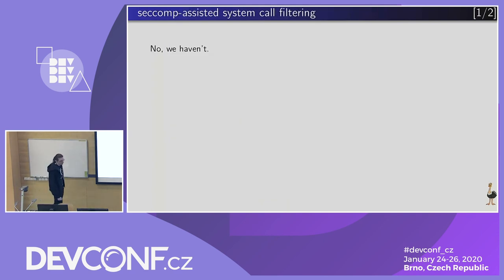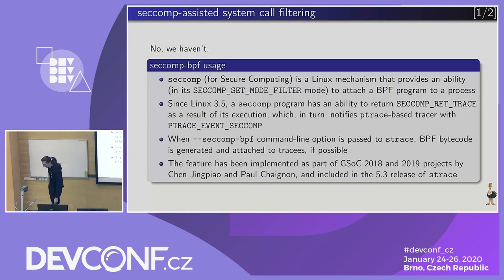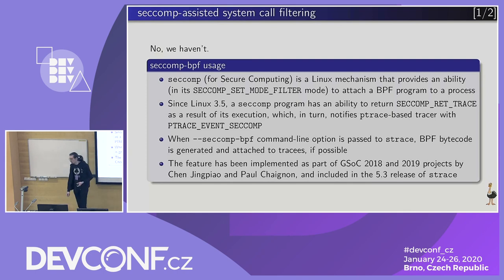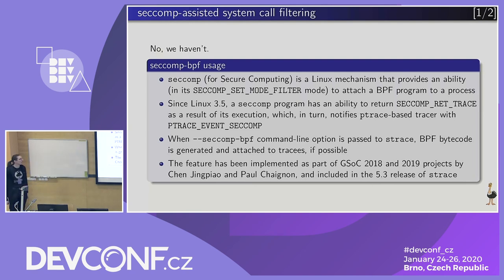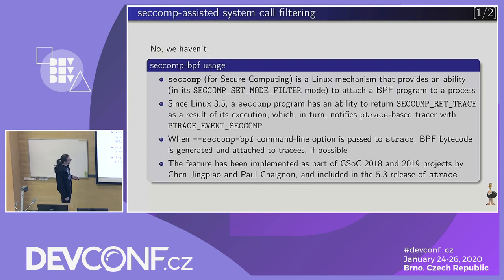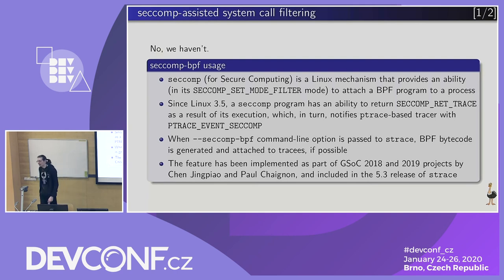But we don't actually have to do so. There is another infrastructure in the Linux kernel called SecComp — secure computing — which allows enabling syscall filters for processes. It was implemented for process sandboxing, but was extended. What is interesting for strace is that in Linux 3.5, seccomp gained an ability to return a value. Sometime later, as a result of two GSoC projects, support for generation of such filters for tracees was implemented in strace and included in strace 5.3.